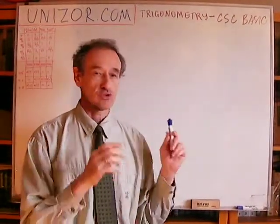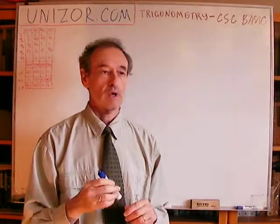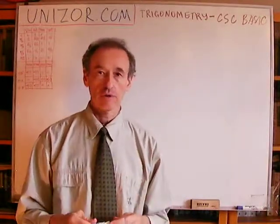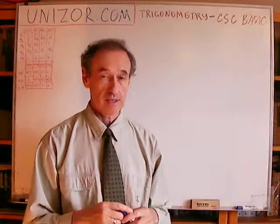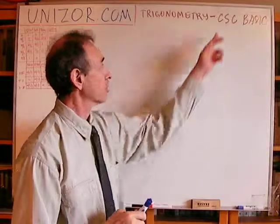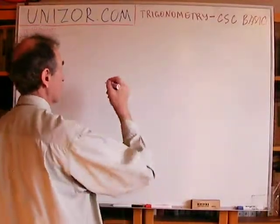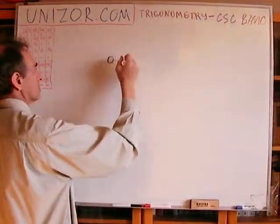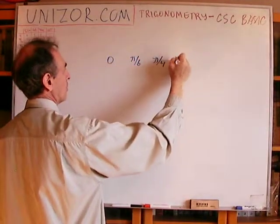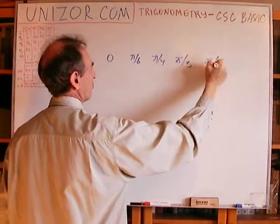This is the last short lecture about trigonometric functions taking certain values for basic values of argument, basic angles. So today we'll talk about cosecant, and angles which I'm talking about are 0, pi over 6, pi over 4, pi over 3, and pi over 2.